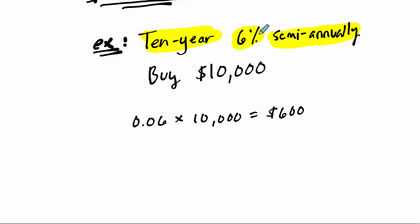But when it says 6% semi-annually, the way they're going to pay that out is they're going to cut that amount in half. They're going to divide it by 2. So it's the interest that you're getting times the amount you're investing divided by the number of periods in your bond. In this case, the payout is divided by 2, it's semi-annually. So that would be $300 twice a year.